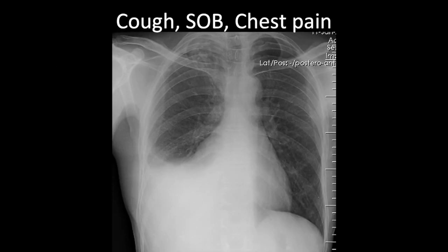So those are examples of mediastinal masses. Let's look at this one now. When you look at this film, there's a clear abnormality on the right side. You can see soft tissue density which obscures the right hemidiaphragm. It has a meniscus configuration here — this is a right pleural effusion.